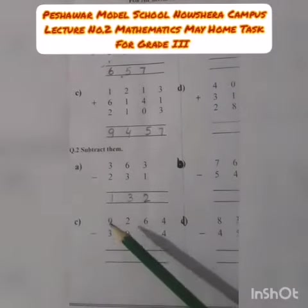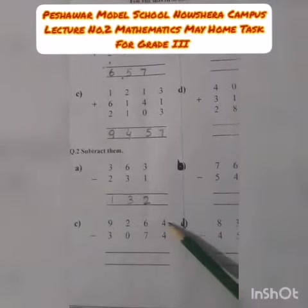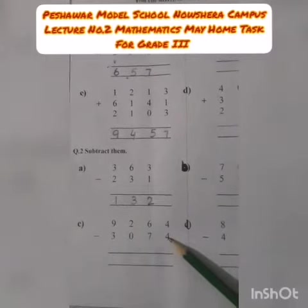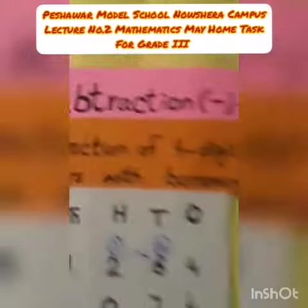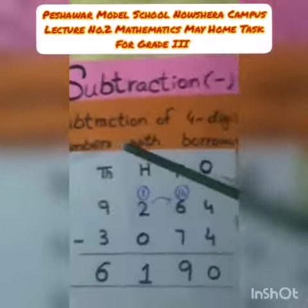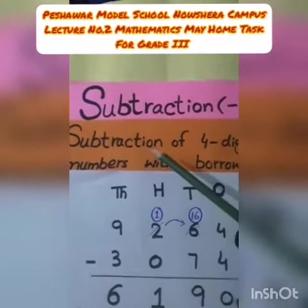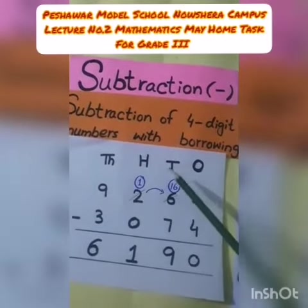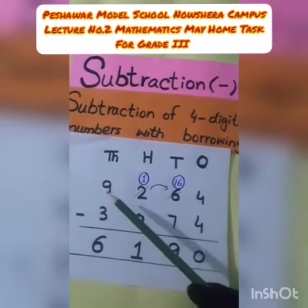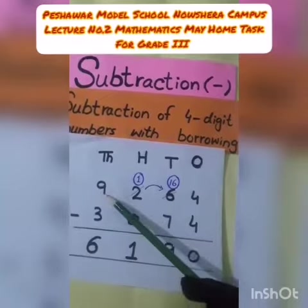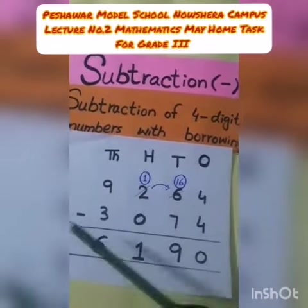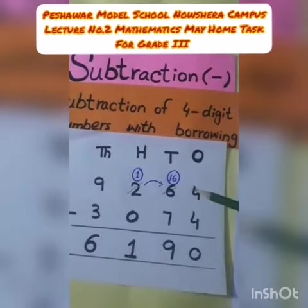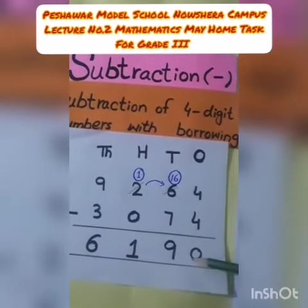Nine thousand two hundred and sixty-four minus three thousand and seventy-four. This is subtraction of four-digit numbers with borrowing. We have ones, tens, hundreds, and thousands places. Four minus four is equal to zero.